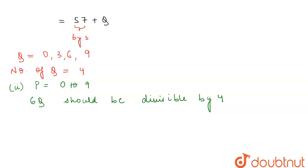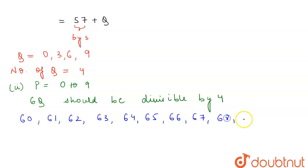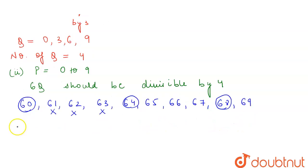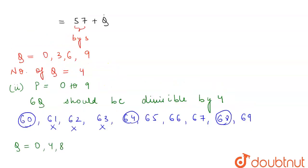Checking values of q from 0 to 9, we get the two-digit numbers 60, 61, 62, 63, 64, 65, 66, 67, 68, and 69. Of these, 60, 64, and 68 are divisible by 4. Therefore the value of q can be 0, 4, or 8. The value of p can be anything from 0 to 9.